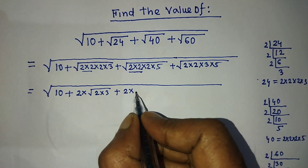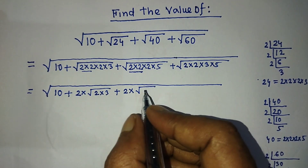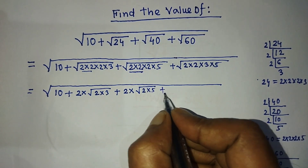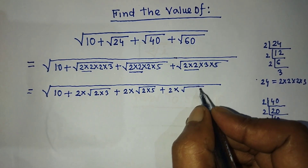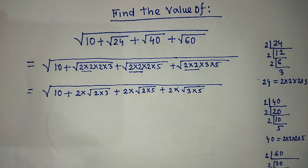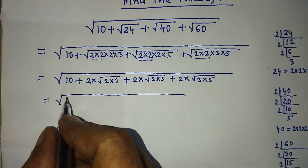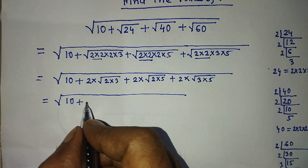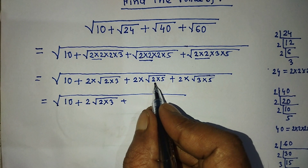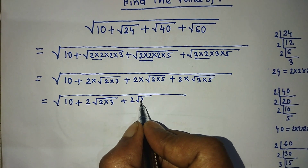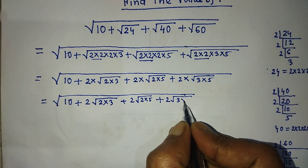To find the square root of 40: there is also one pair of 2, so we take a single 2 outside the root. The 2 and 5 are both unpaired, so we write 2√(2 × 5), that is 2√10. Similarly for 60, we take a single 2 from the pair, and 3 and 5 are unpaired, so we write 2√(3 × 5), that is 2√15. So our expression becomes √(10 + 2√6 + 2√10 + 2√15).